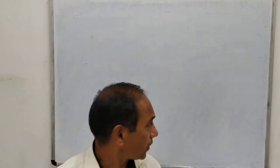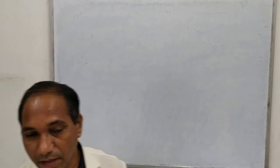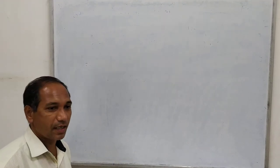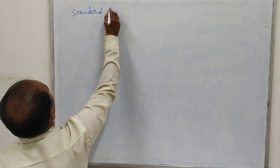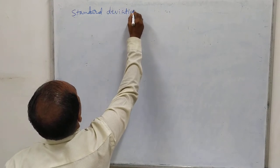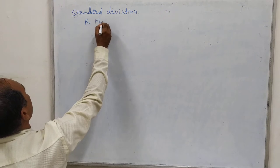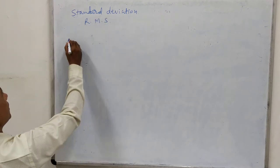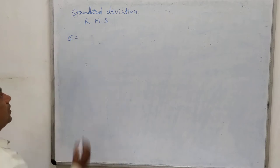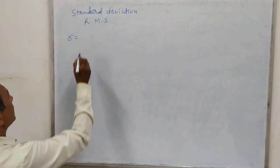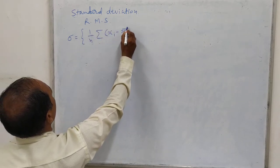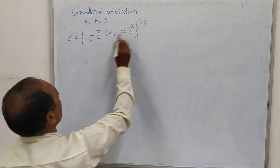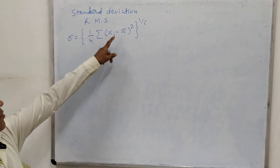Students, now we continue with the topic of standardization that we stopped in the last lecture. We also know that this is known as root mean square, and we have denoted this by sigma. We have seen the formula as 1 upon n times sigma of (xi minus x-bar) whole square, raised to 1 half — that means square root of the mean of the squares.